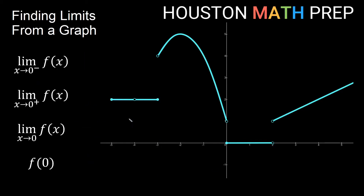Looking around x equals 0 on this new function: approaching from the negative side, I'd be on the curvy piece approaching an open hole at a y value of positive 1. Approaching from the positive side, from the right, I'm on the flat line approaching a dot at the origin, which has a y value of 0. Since we don't approach the same y value from both sides, the overall limit does not exist.